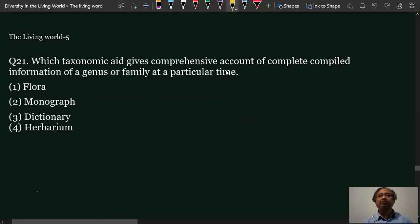Which taxonomic aid gives comprehensive account of complete compiled information of a genus or family at a particular time? The answer is monograph.